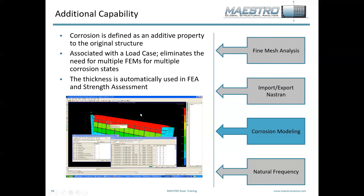One of the nice things here is that because corrosion is treated as an attribute of the element and is considered a load case in the model, you only have to deal with one finite element model — as opposed to if you had different corrosion areas you wanted to evaluate and actually modified the thickness of the plate, in which case you'd have to maintain separate models for each one of those cases.